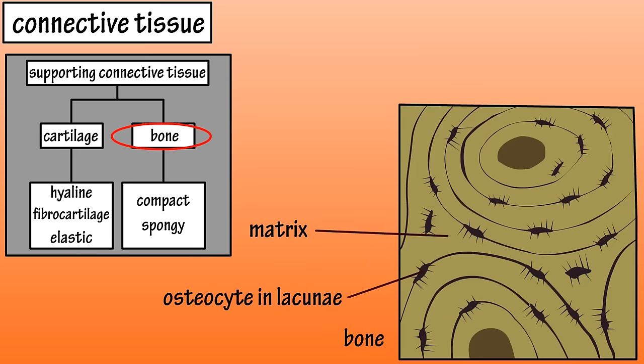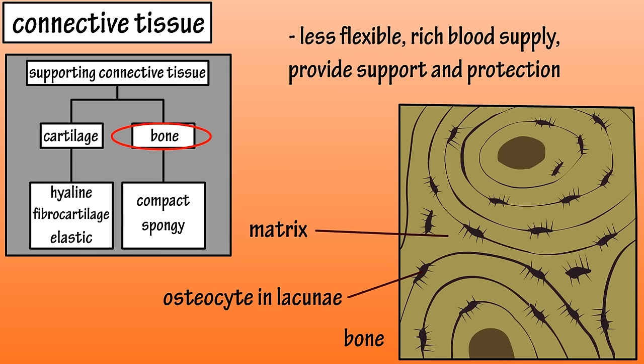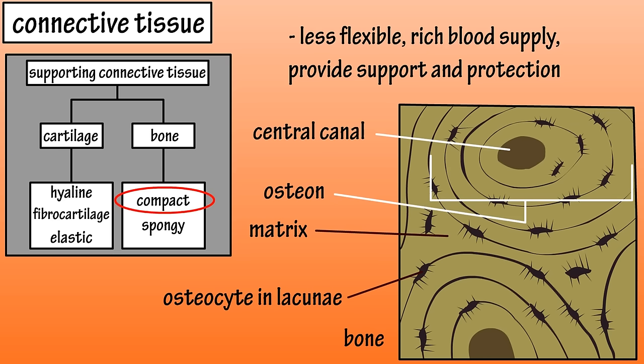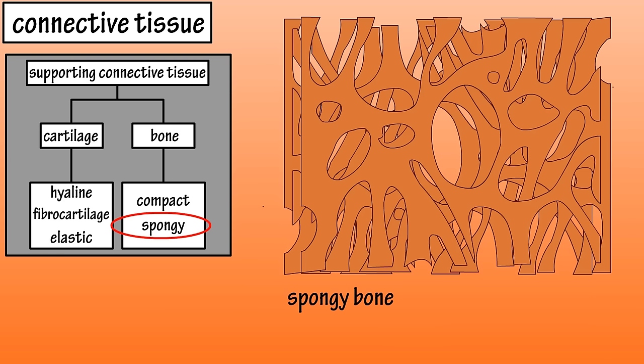Bone is the second type of supporting connective tissue. It's more solid than cartilage but less flexible, and it has a rich blood supply. The extracellular matrix of bone consists of collagen fibers and mineral salt crystals, and bone cells called osteocytes occupy small spaces called lacunae and are scattered throughout the matrix. Bones provide support and protection and also provide a point of attachment for muscles. There are two main bone tissue types: compact and spongy. Compact bone forms cylindrical structures called osteons, which look like rings, and they surround a central canal that houses nerves and blood vessels. Spongy bone has a lattice-like look to it, is located in the interior of a bone, and is strong but lightweight.